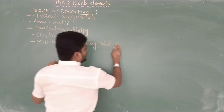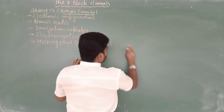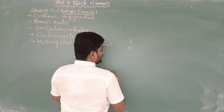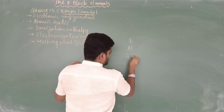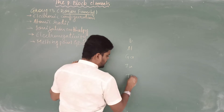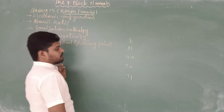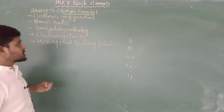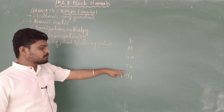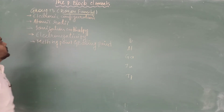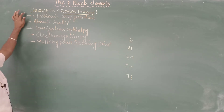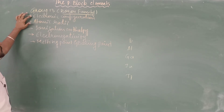If you look at the elements present in group 13, the first element is boron, then aluminium, gallium, indium, and thallium. So these are the five elements which come under group number 13: boron, aluminium, gallium, indium, and thallium.